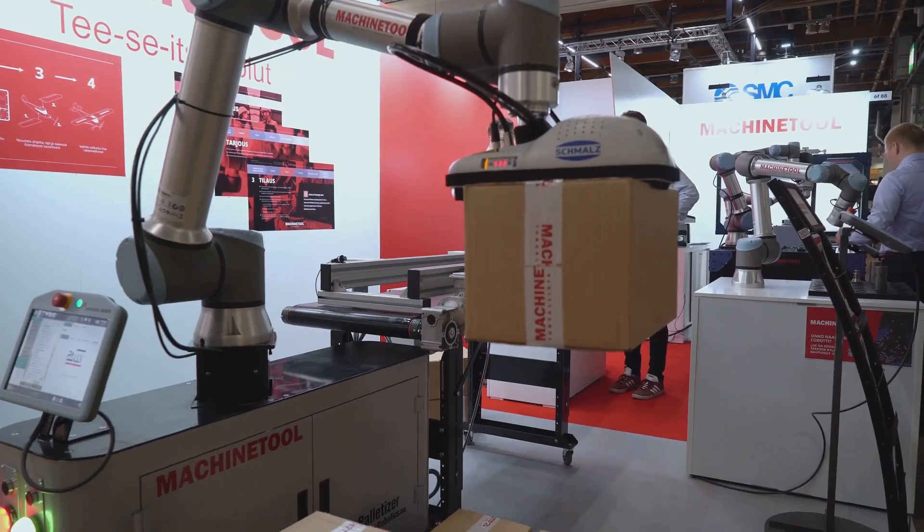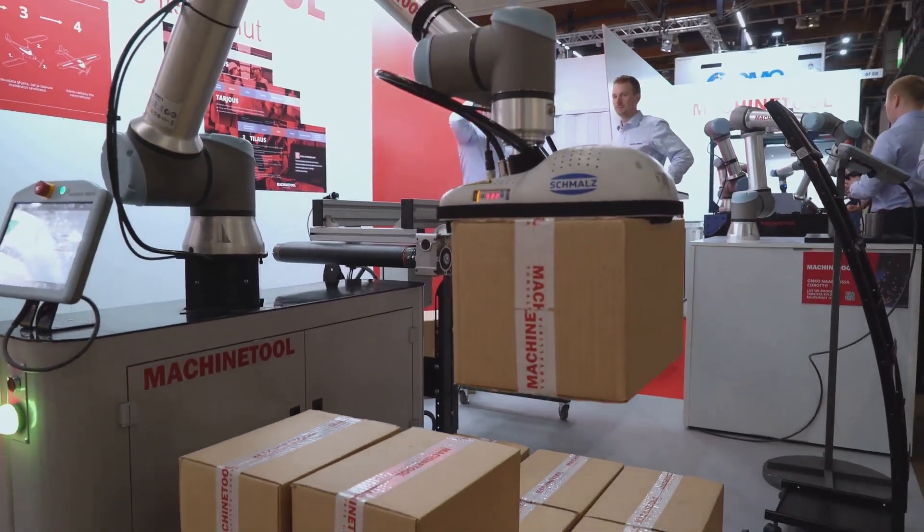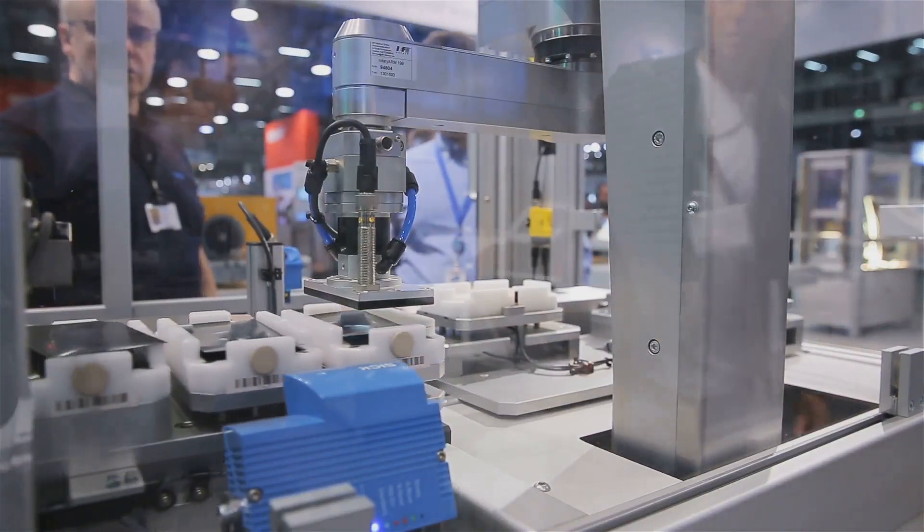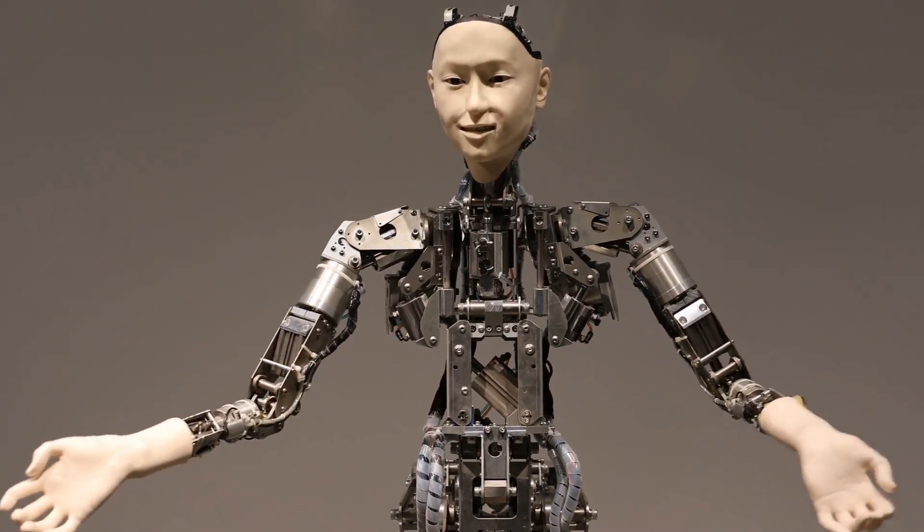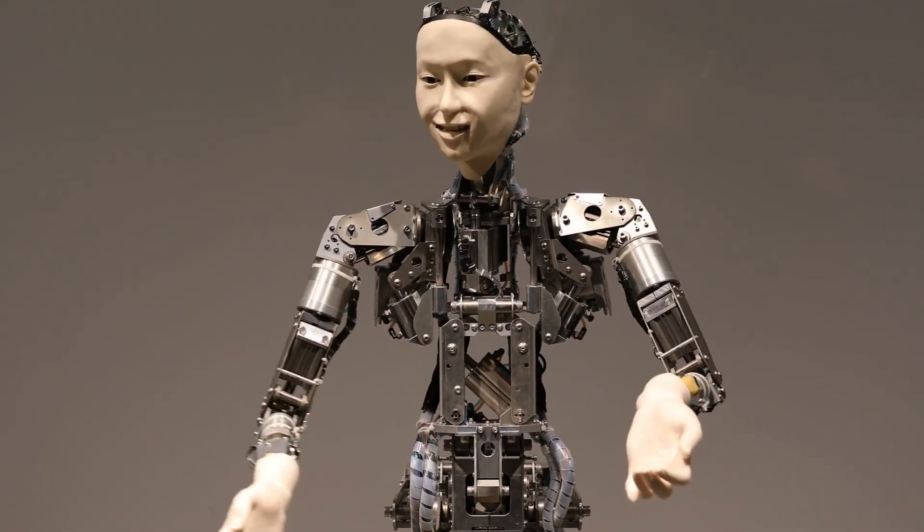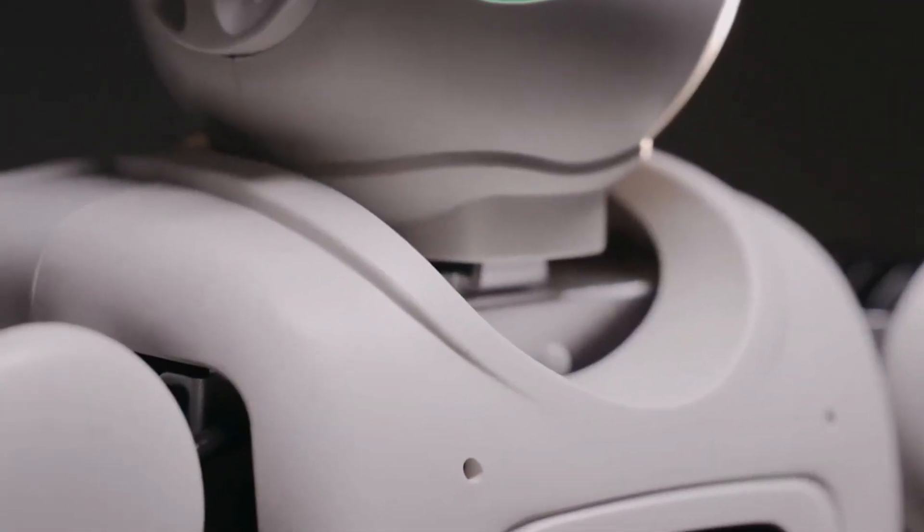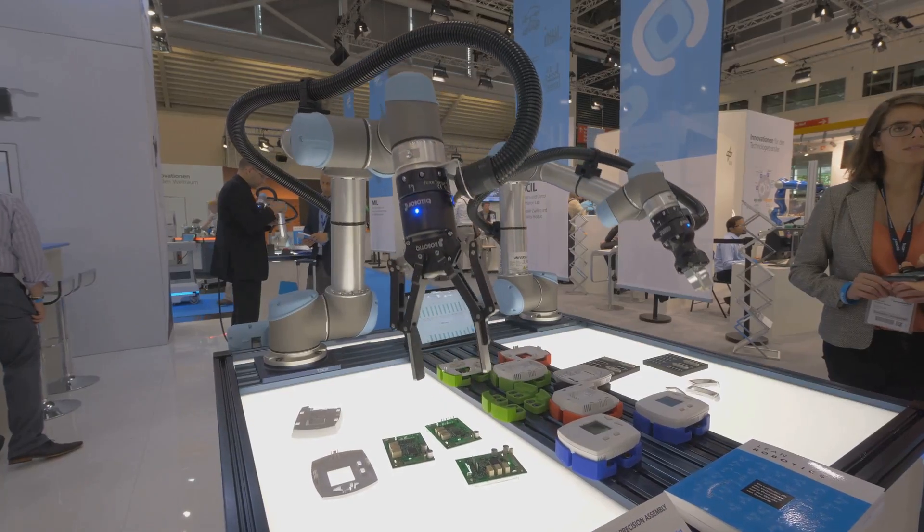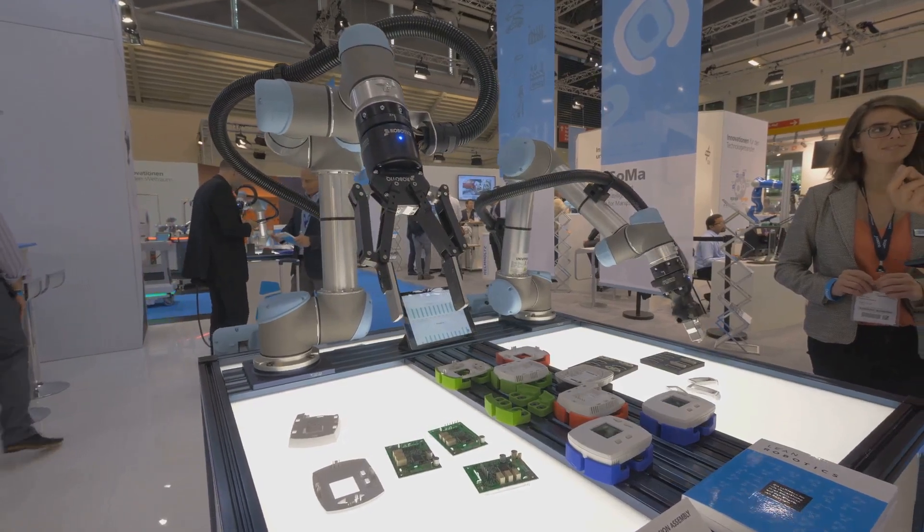The Chinese government sees them as a solution to labor shortages. They are also seen as a way to improve efficiency and productivity. These robots are equipped with advanced sensors and artificial intelligence. This allows them to learn and adapt to new tasks. They can work independently or collaboratively with human workers.